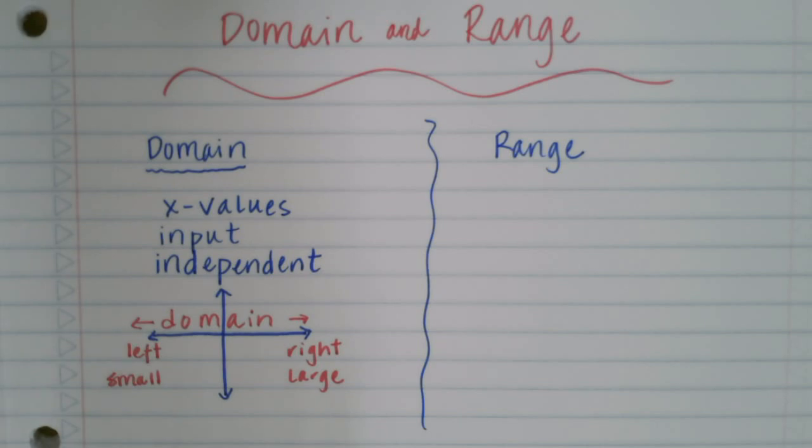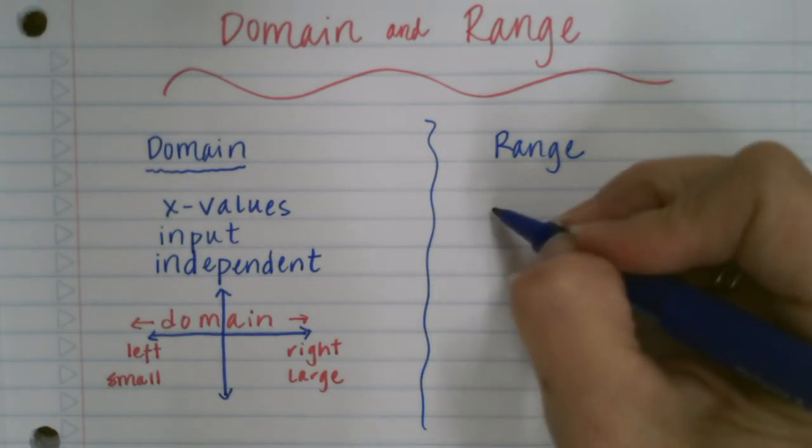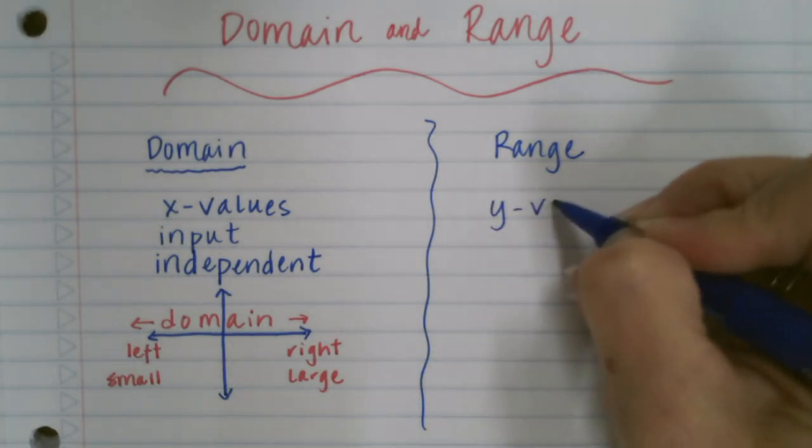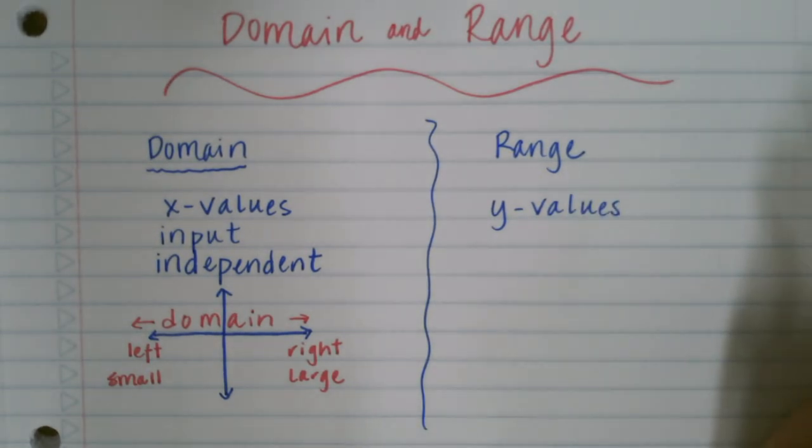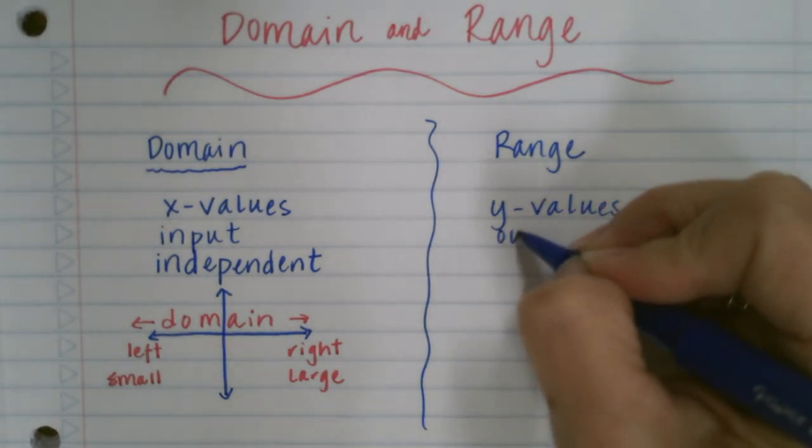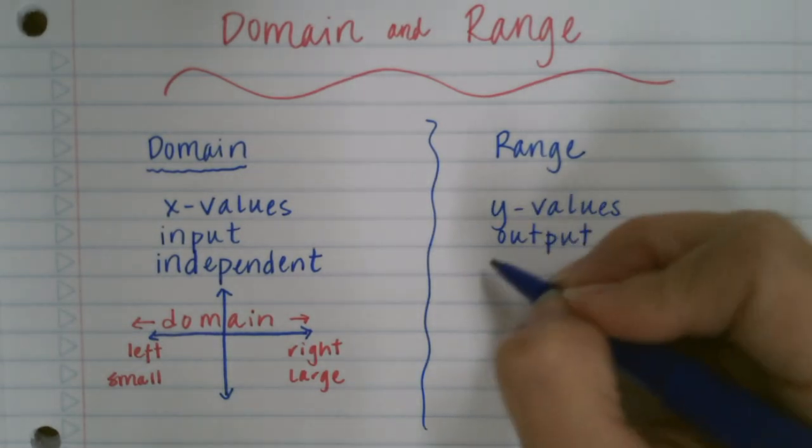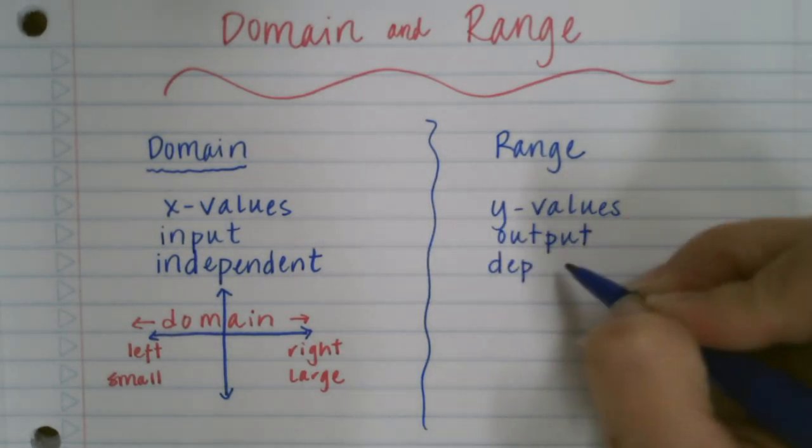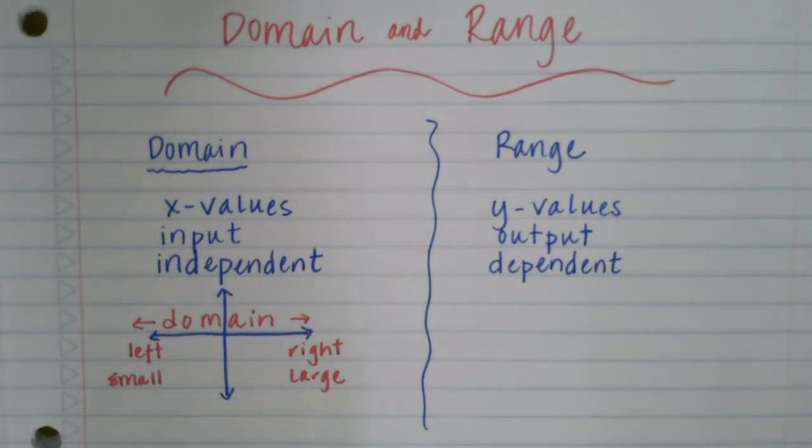Now our range is basically the same idea, except we are talking about the y values of a function. Those are known as the output, and it is the dependent variable of the function.